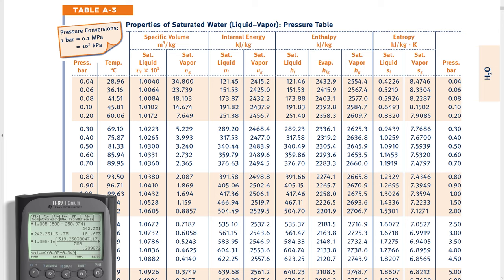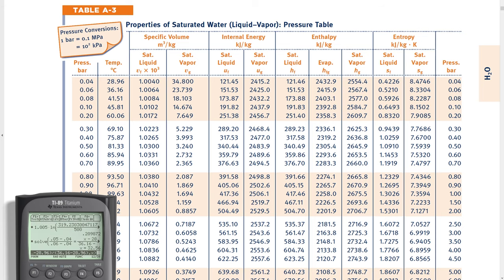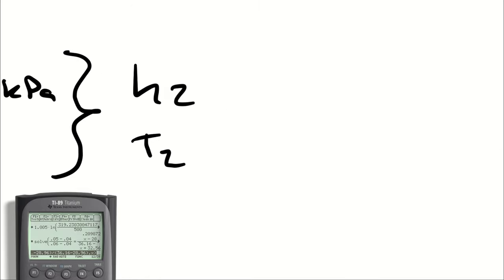0.05 minus 0.04 divided by 0.06 minus 0.04 is equal to x minus 28.96 divided by 36.16 minus 28.96. And that gives me a syntax error. That gives me a temperature of 32.56, which represents my actual temperature at the actual outlet. 32.56 degrees Celsius.